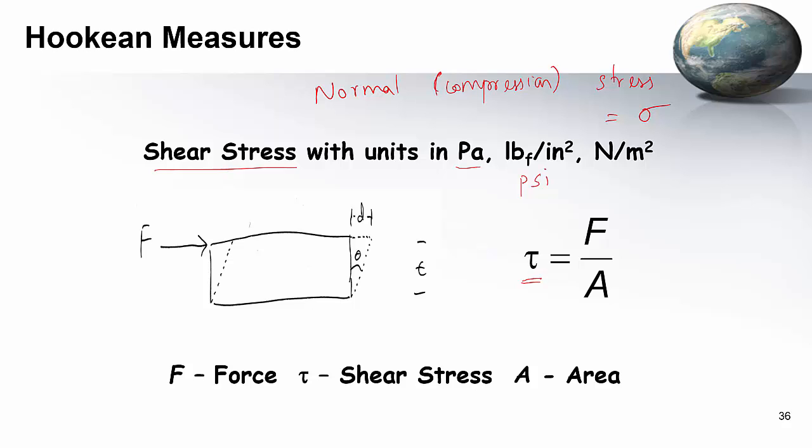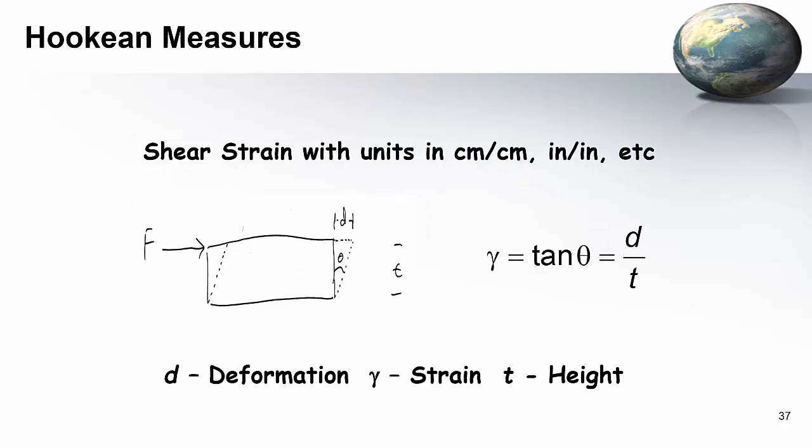Pascal is nothing but the newton per meter square. So when you apply the force, you are deforming it. And then the deformation over the original dimension is the strain. Here the deformation is D, and the original dimension here is the thickness, so it's D over T.